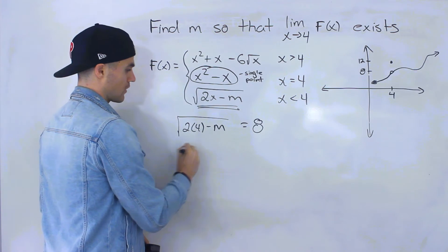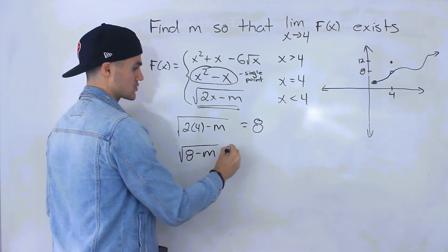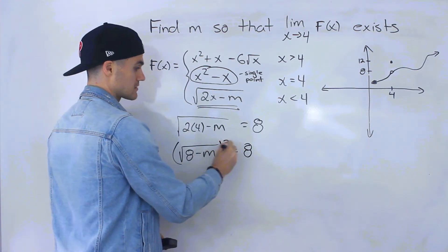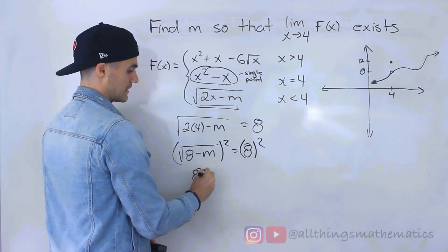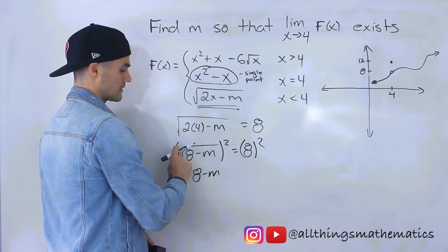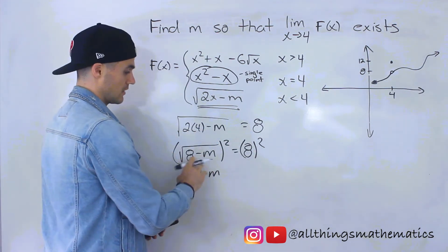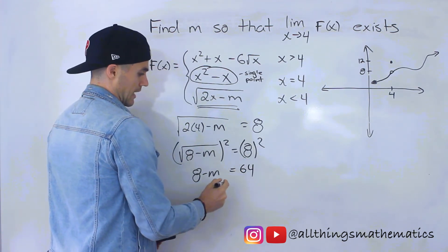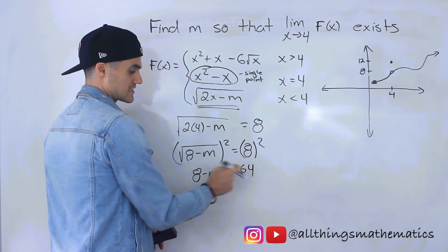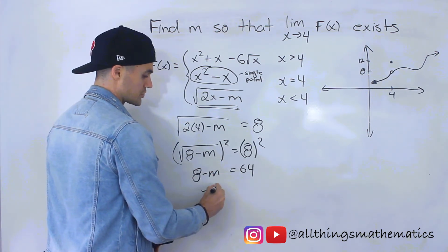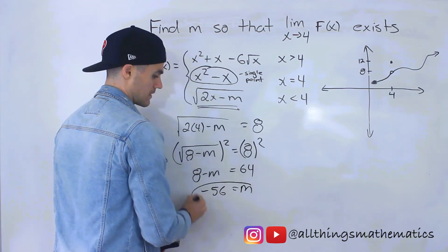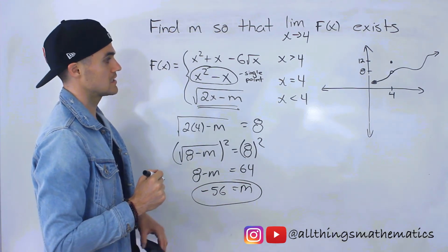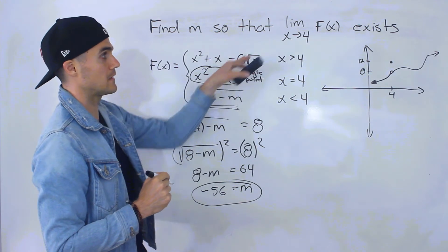Solving for m: we have the square root of 8 minus m equals 8. Squaring both sides gives 8 minus m equals 64. Bringing terms over: m equals 8 minus 64, which is negative 56. So m equals negative 56 is the value that makes this limit exist.